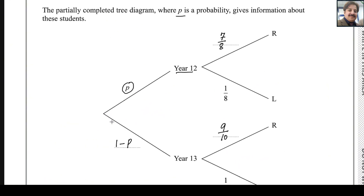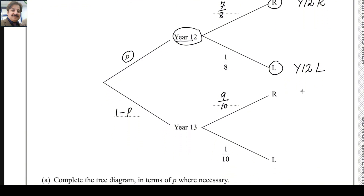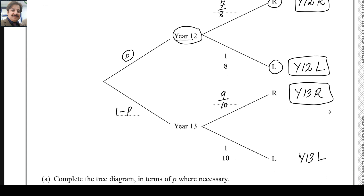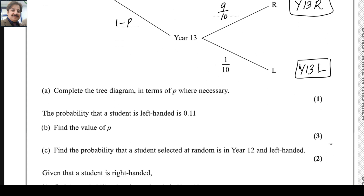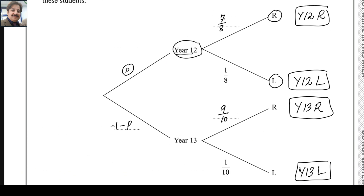It's better to complete the sample space here. The total outcomes are: Year 12 with left hand, Year 12 with right hand, Year 13 with right hand, and Year 13 with left hand. These are all the total possible outcomes, and they will help you find the required probabilities.